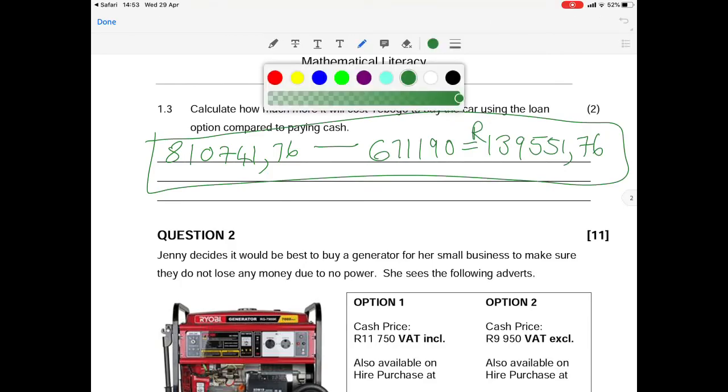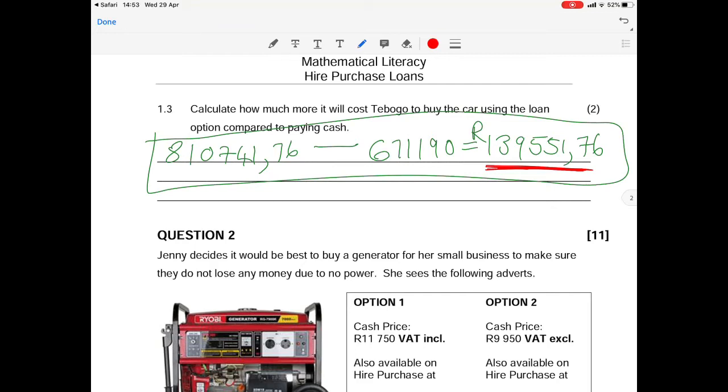Just for interest sake, this R139,000 that you've worked out is what Tabogu is going to pay extra if he takes out the loan. That works out to roughly 20% of the cash price of the car. So if we take out a loan rather than buying the car cash we're going to pay roughly 20% more.